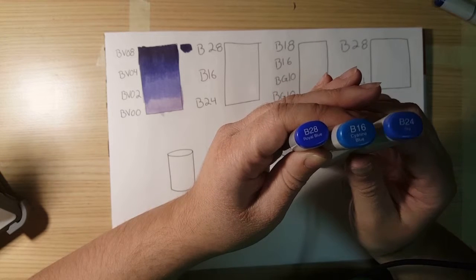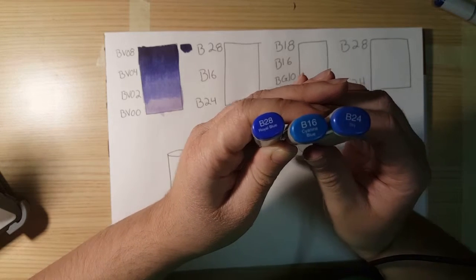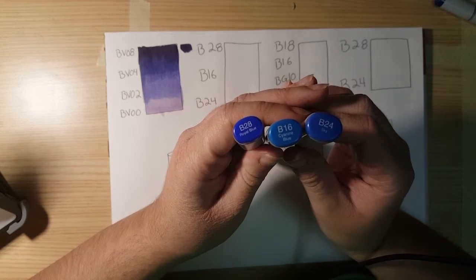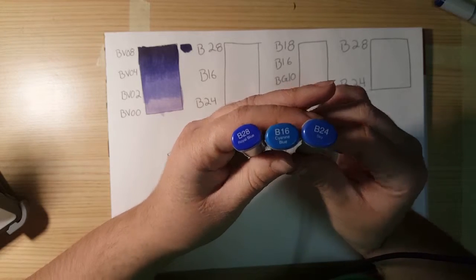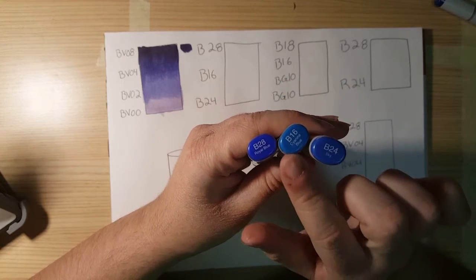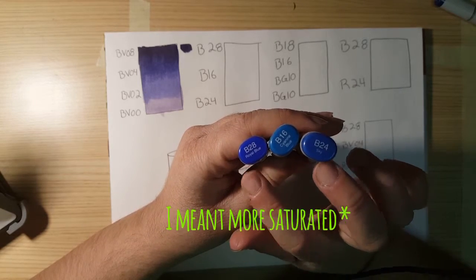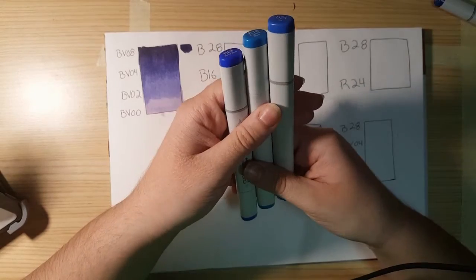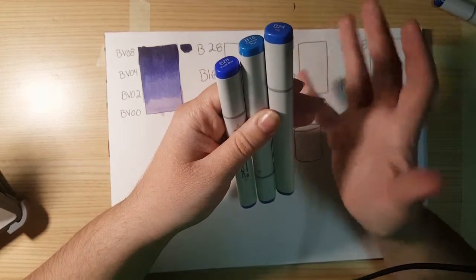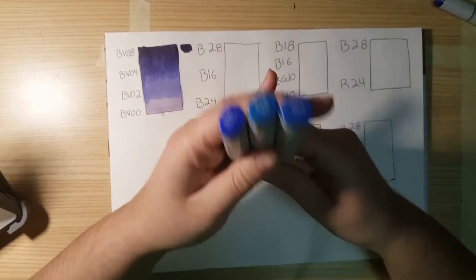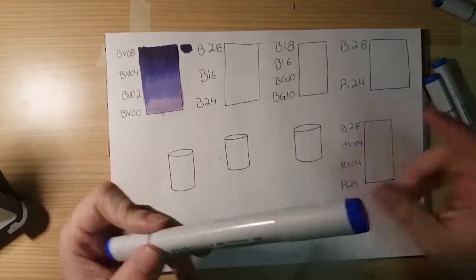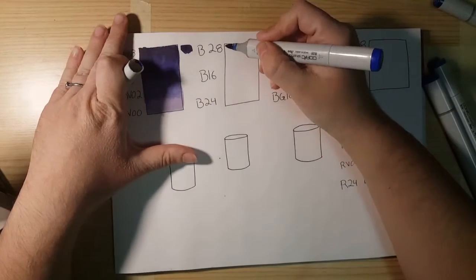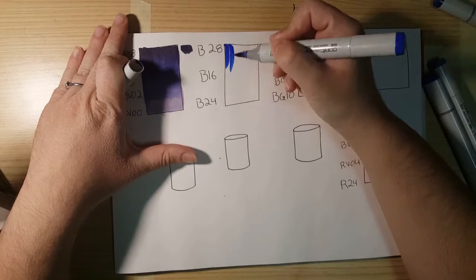Now, with these ones, it's a little bit different. You see, the B16 is a little bit brighter than the B24 and the B28. However, they can still blend nicely. And it kind of creates a different look to it. So, we'll start with the B28 and go again with that kind of flick motion.